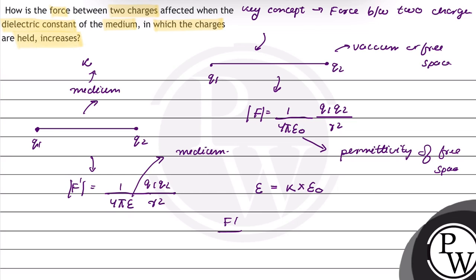So f dash upon f ki value hogi epsilon naught upon k epsilon naught.